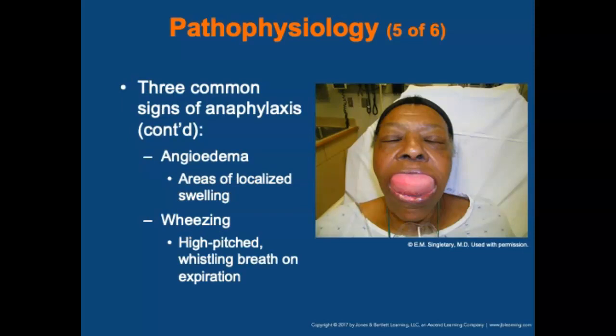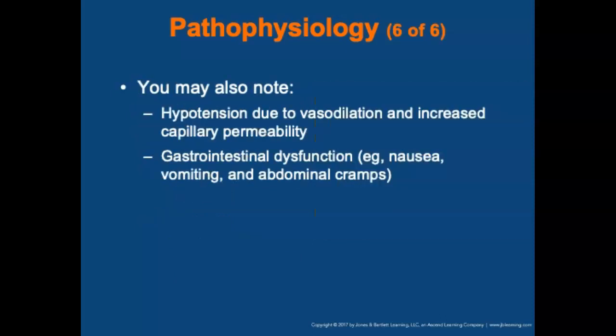Another sign is angioedema — areas of local swelling; you can actually see in the slide that this patient's tongue has angioedema. Also, wheezing: allergic reactions and anaphylaxis produce a high-pitched whistling breath sound typically heard on expiration, resulting from bronchospasm, bronchial constriction, and increased mucus production. You may also note hypotension due to vasodilation and increased capillary permeability. An often overlooked symptom is persistent gastrointestinal dysfunction such as nausea, vomiting, and abdominal cramps.